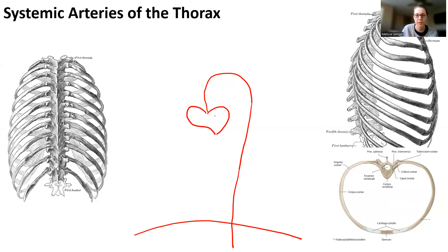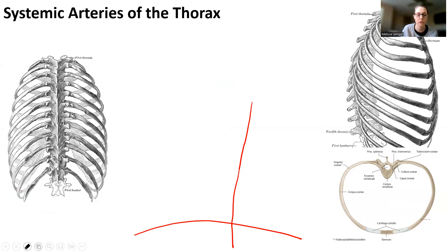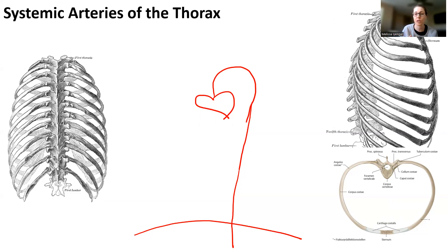The thoracic aorta is towards the left of the vertebral column, so it's on the left side of the vertebral column. Remember, because the heart is technically situated closer to the left side of the body, that is going to force some weird asymmetrical changes in the thoracic cavity.